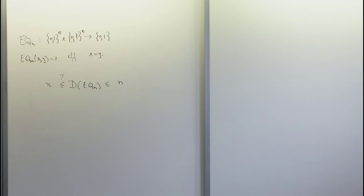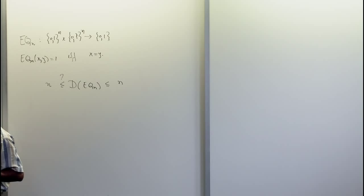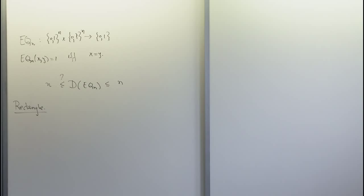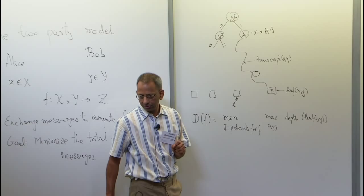It turns out, and we'll show this, that there cannot be a better protocol than this trivial protocol deterministically, where one party sends the entire input. My goal is to introduce various concepts of communication complexity through this example, so I'll tell you about something called a rectangle. Let's look at a particular leaf and ask what inputs arrive at this leaf.